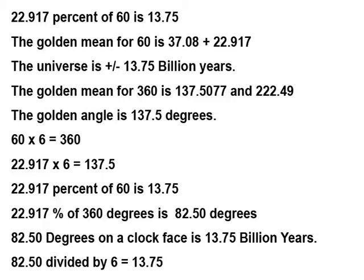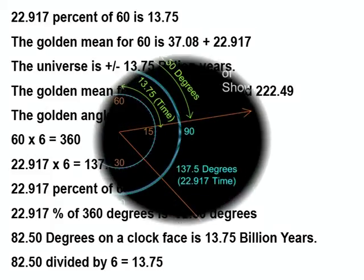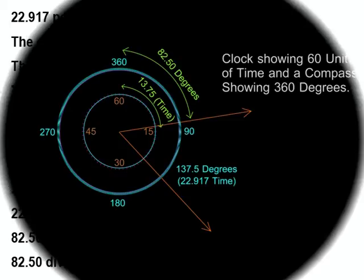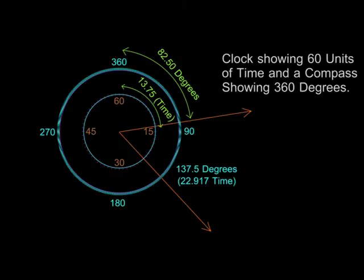The estimated age of the universe is 13.75 billion years. We are living at a golden point in time when new things occur in nature. The universe is not a place. It is an event or story that unfolds over 60 units of time in all six directions or dimensions. 60 times 6 equals 360.